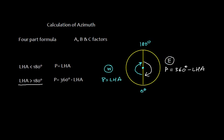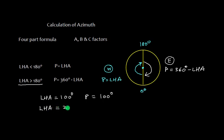Let me give you one example. Suppose LHA is 100 degrees, so P will be 100 degrees. Now if the LHA is 200 degrees — that means more than 180 degrees — then P will be 360 minus 200, that is 160 degrees. That is the way we need to compute.